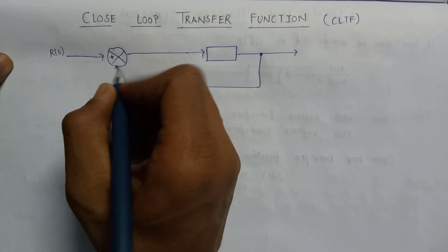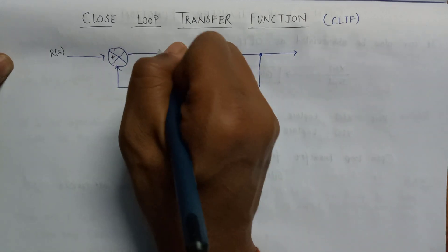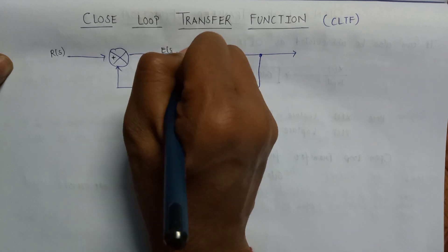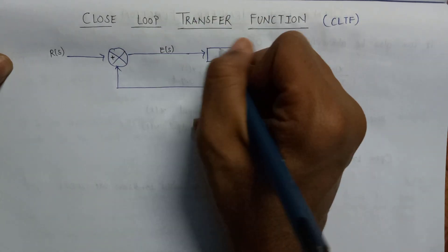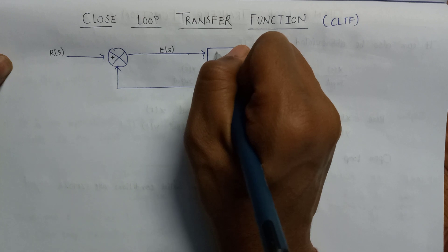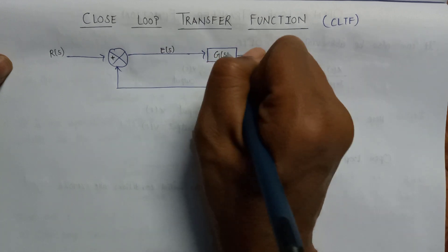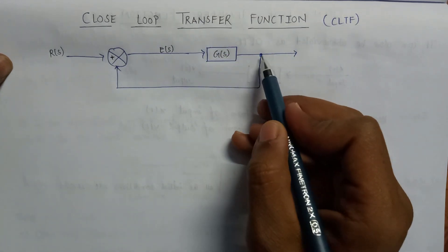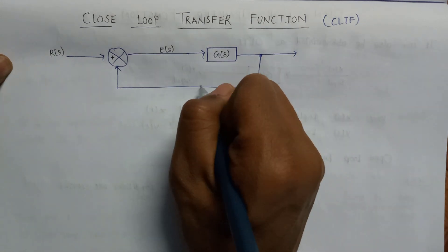This is summer and this is intermediate stage E. This is forward path gain which is G. This is the takeoff point from which there is a feedback loop.